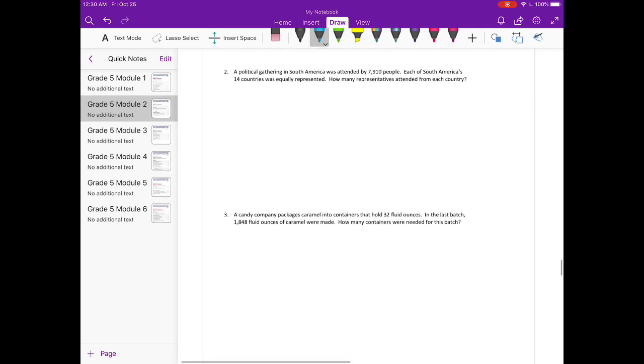Number 2. A political gathering in South America was attended by 7910 people. Each of South America's 14 countries was equally represented. How many representatives attended from each country? So there were 7910 people. And 14 were each represented equally. So we're going to divide. 7910 divided by 14 to see how many representatives were from each country. Okay. 14 can't go into 7, but it could go into 79. Let's try 6. 14 times 6.